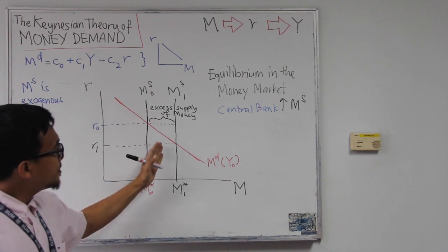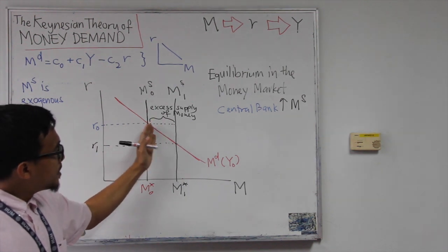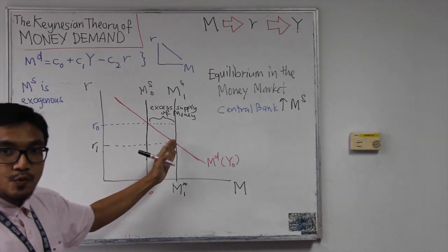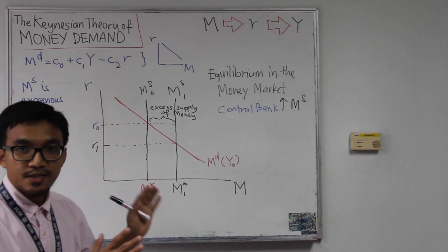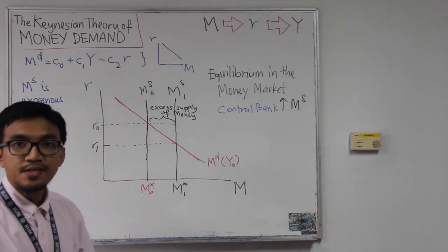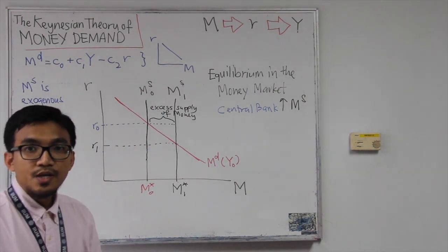So investment, I'm sorry, the demand for money will go down. So we have a new intersection, new equilibrium with a lower interest rate and greater quantity of money. So is this story complete? No. Why?